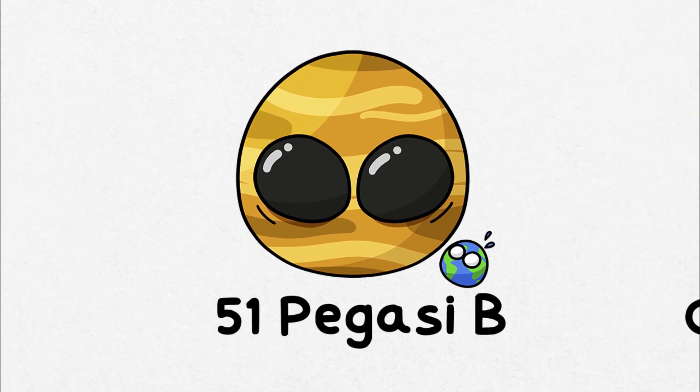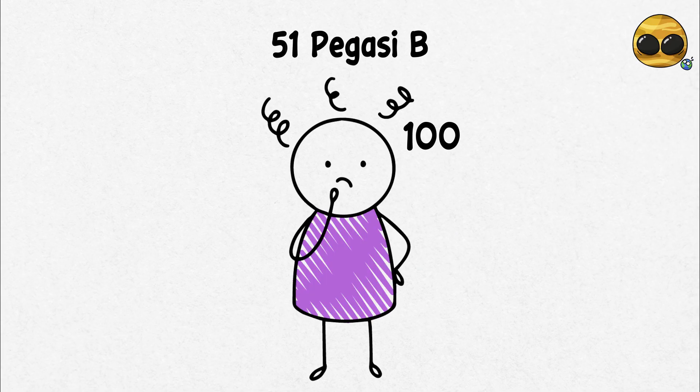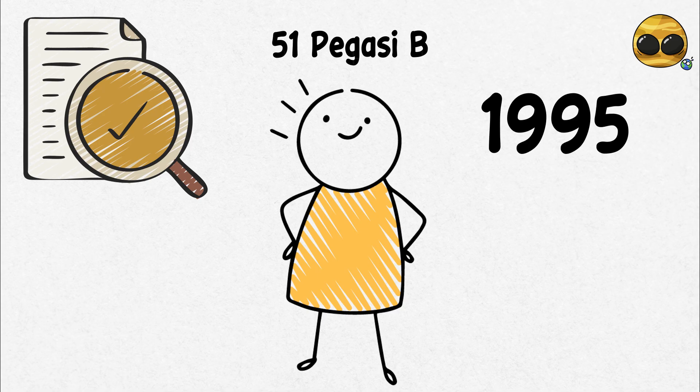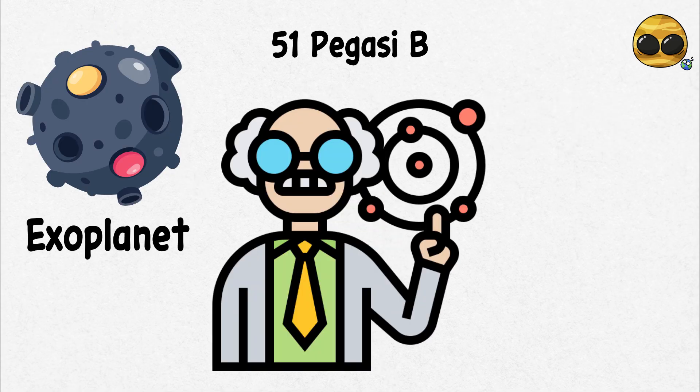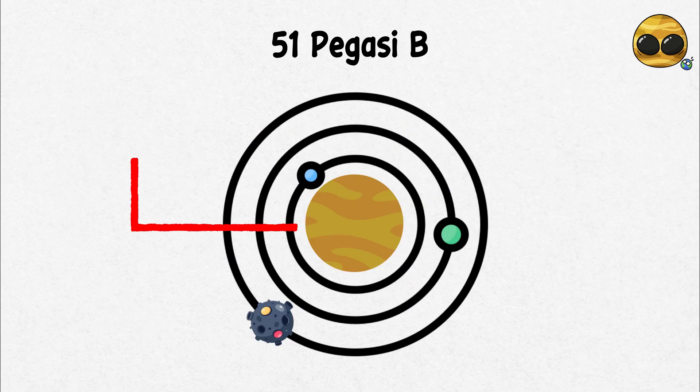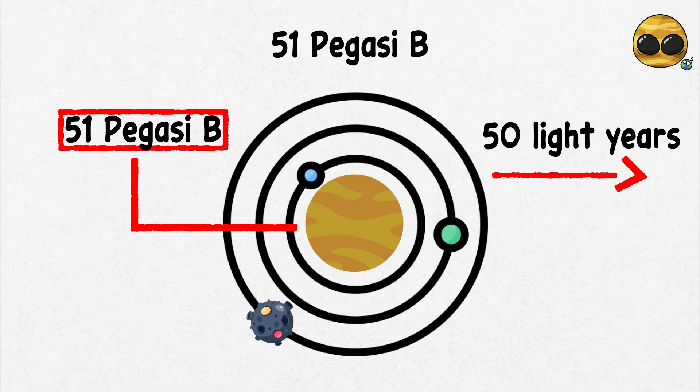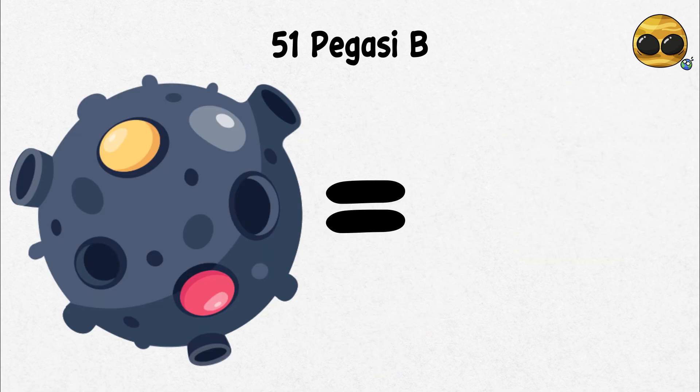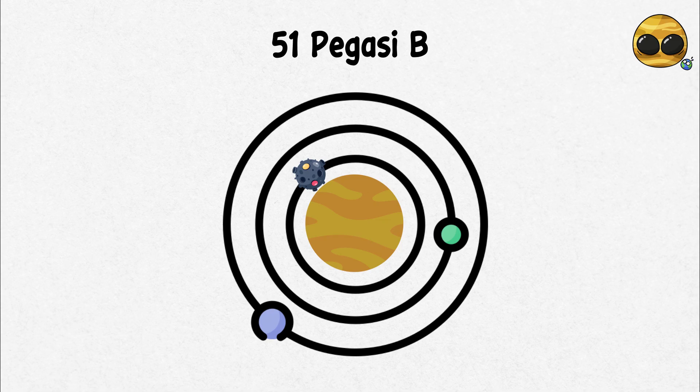Discovery of exoplanets, 51 Pegasi b. For centuries, humans had wondered if there were other planets like ours out there. And then came the proof when in 1995 astronomers found the first exoplanet, a planet outside our solar system orbiting a star named 51 Pegasi, about 50 light years away. 51 Pegasi b, as the planet was named, was a gas giant similar in size to Jupiter but incredibly close to its star.